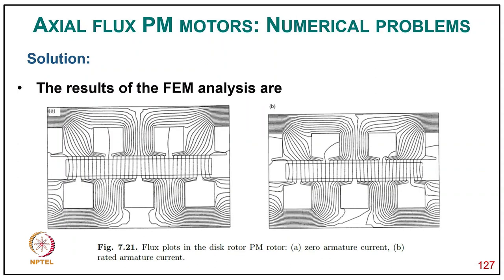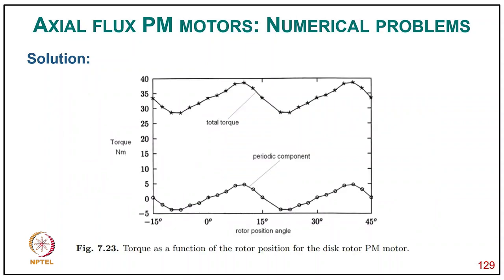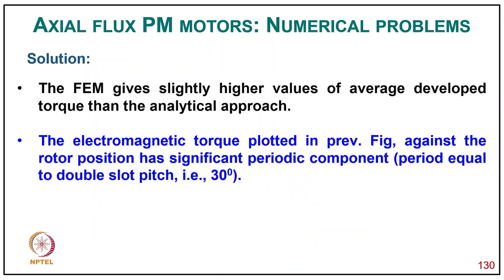The FEM analysis results show the magnetic flux spot distribution in the disc motor at zero armature current and at rated armature current, illustrating the effect of armature reaction on magnetic flux density. The torque as a function of rotor position for the disc PM motor shows total torque and the periodic component. The FEM gives a slightly higher value of electromagnetic torque than the analytical approach. The electromagnetic torque plotted against rotor position has a significant periodic component with a double slot pitch period of 30 degrees.